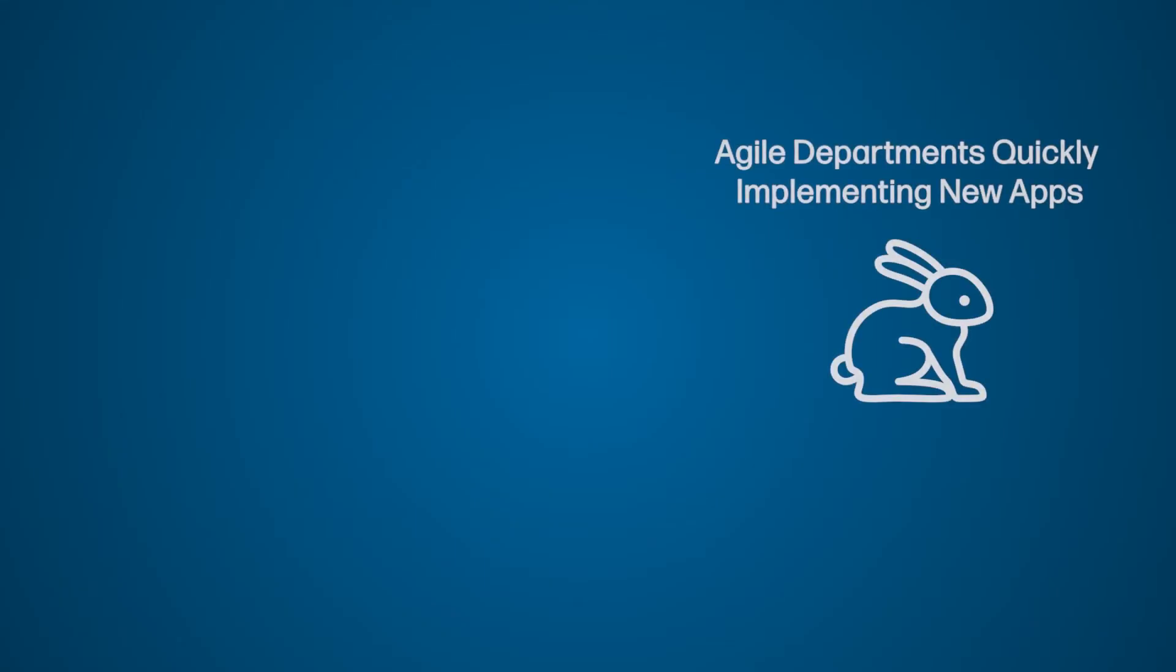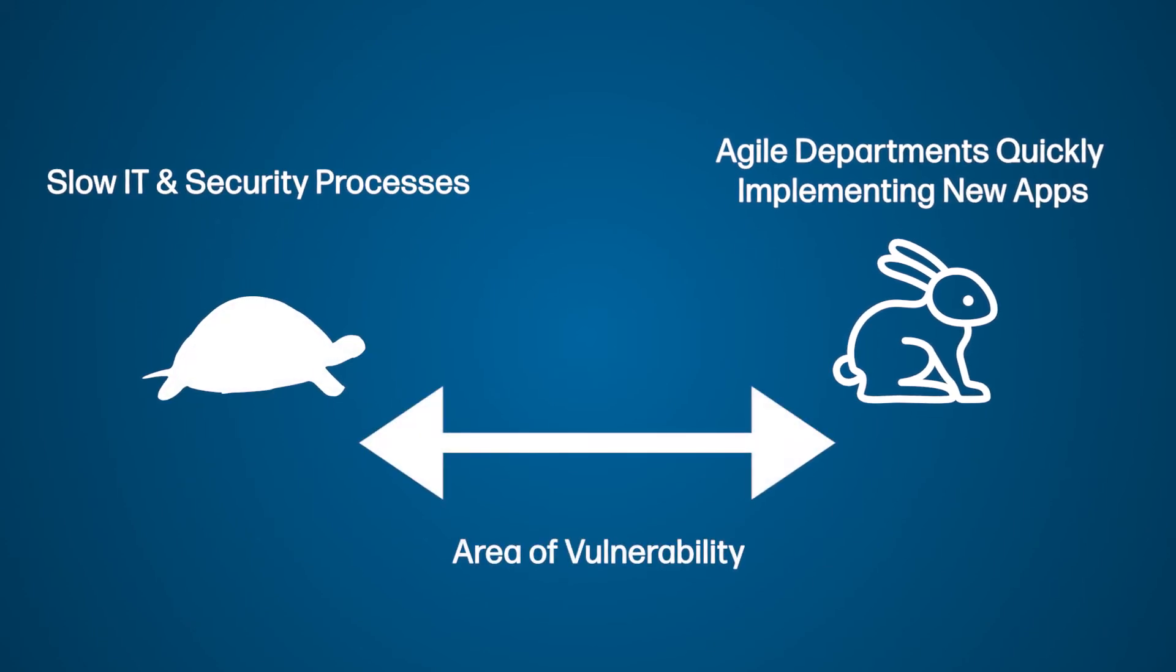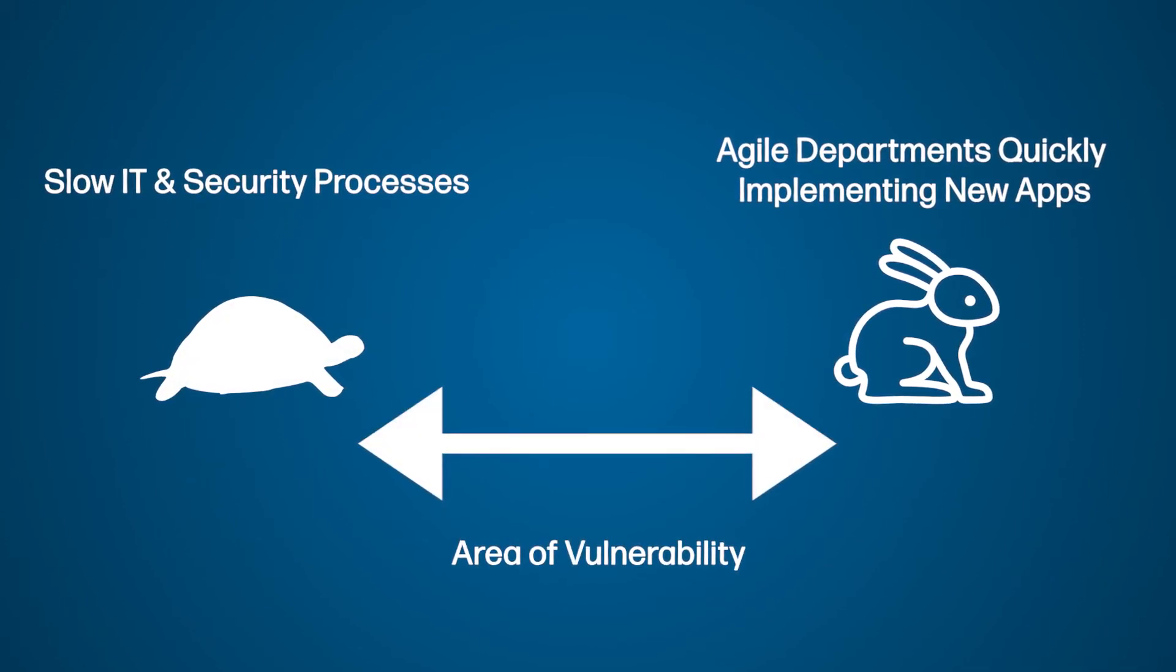With the consumerization of IT, downloading an app to help you do your work is faster than IT and security can implement their solutions. This can create the old tortoise and hare scenario, which can expose the gap in your company's IT infrastructure. The security risk from Shadow IT can be a thorn in IT team's side around the world. However, there is some light at the end of the tunnel. Let's weigh these risks with some pros and cons.